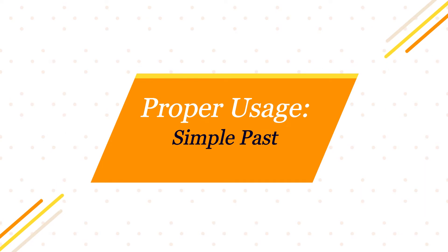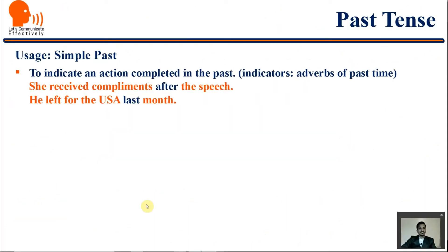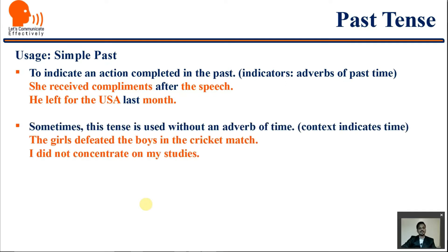Let's see the uses. Simple past is used to indicate an action completed in the past. The indicators are adverbs of past time. For example: 'She received compliments after the speech.' 'He left for the USA last month.' Adverbs like 'last' and 'after' indicate simple past, and the action is already completed in the past.